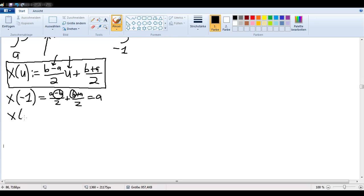And if I take x of 1, then if u is 1, that doesn't change anything up here. So I have (b minus a) over 2 plus (b plus a) over 2. The 2's cancel out, and I'm left with b over 2 plus b over 2, which is of course b.